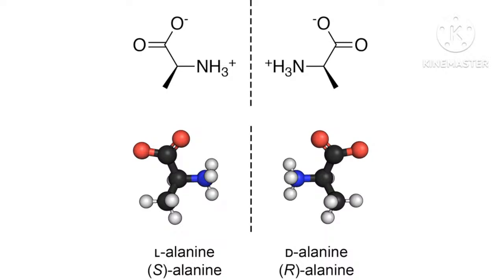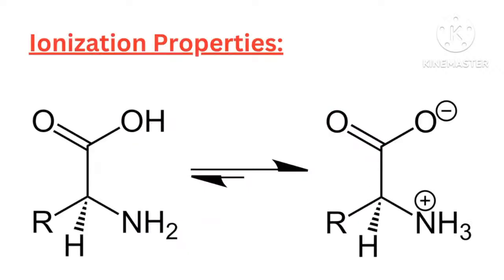Functional groups. A) Amino group (NH2): a basic group capable of accepting protons; participates in hydrogen bonding and ionization. B) Carboxyl group (COOH): an acidic group that donates protons at physiological pH; key in forming peptide bonds. C) Hydrogen atom (H): non-reactive, but essential for structural balance. D) Side chain (R group): determines chemical reactivity, solubility, and interaction with other molecules.